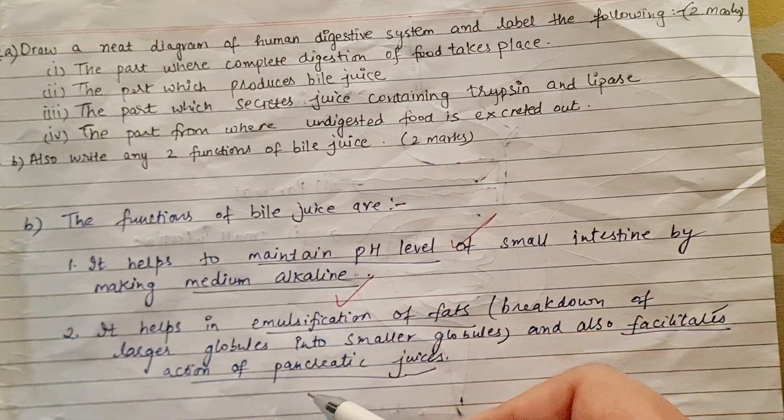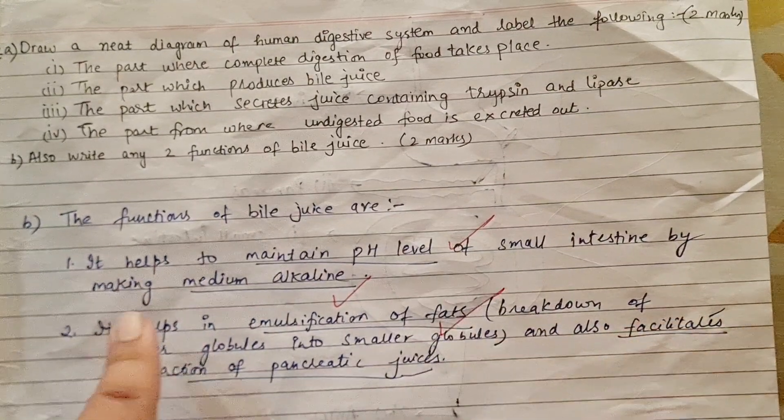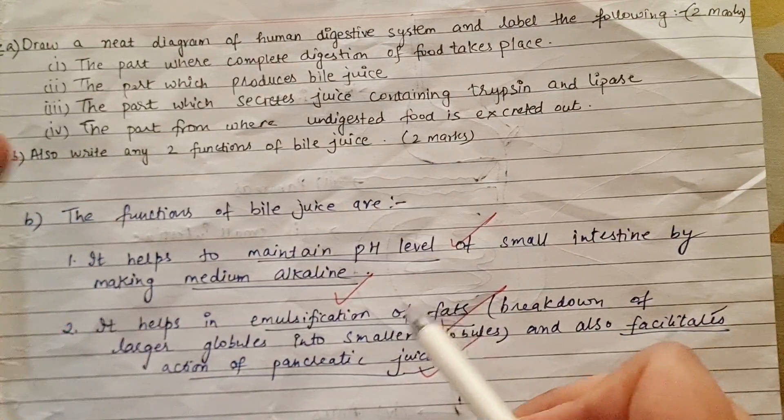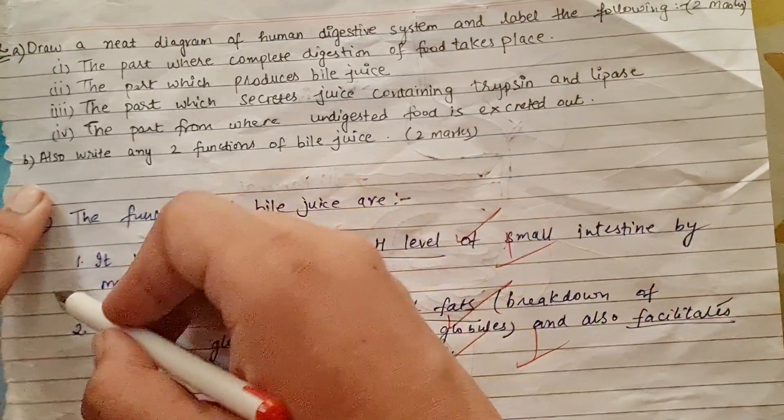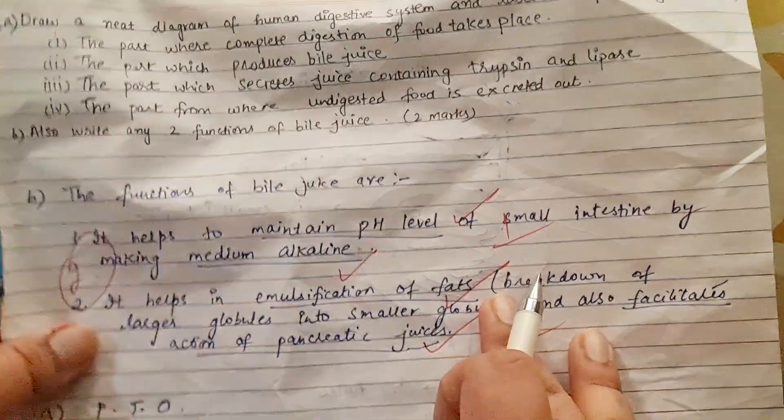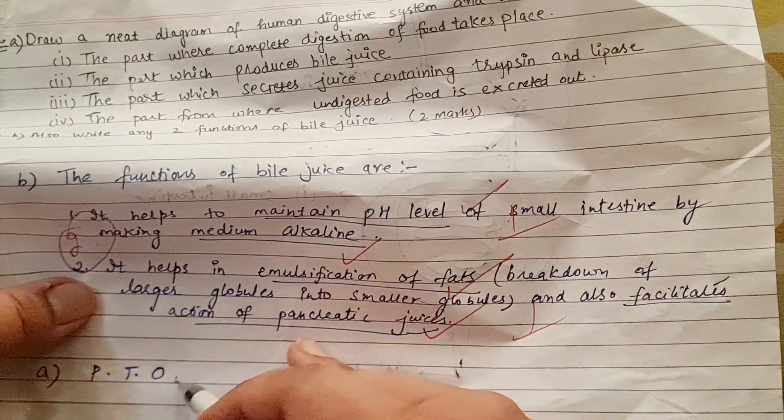That's a hack for you. Second, it helps in emulsification of fats, correct, and also facilitates action of pancreatic juices. Examiners don't have much time, so they will study one by one. One number will get one, so total two marks. For this part, the student has written PTO, which means please turn over so the examiner turns over.